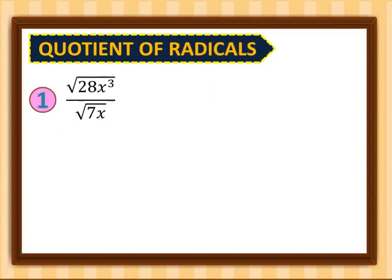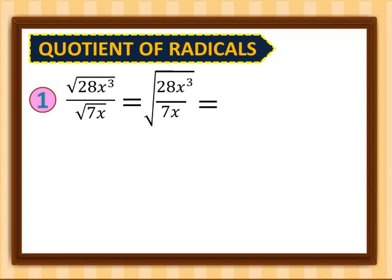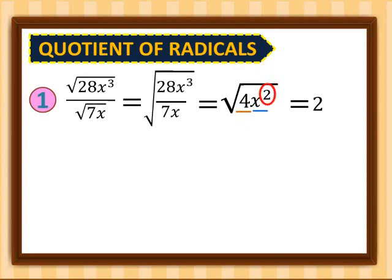So let's have the first example: square root of 28x cubed over square root of 7x. If you're going to put them into one radical, this would become square root of 28x cubed over 7x. Simplify: 28 over 7 gives us 4, and x cubed over x gives us x squared. Square root of 4 gives us 2, and for square root of x squared, we divide the exponent by the index 2, which gives us exponent 1.